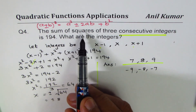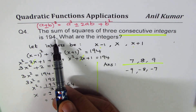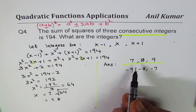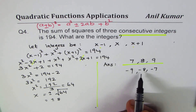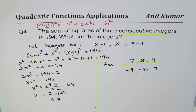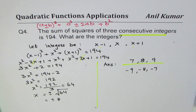The three consecutive integers whose sum of squares is 194 are 7, 8, 9 or minus 9, minus 8, minus 7. I'm Anil Kumar and I hope that helps. Feel free to share, subscribe, and post questions. Thank you and all the best.